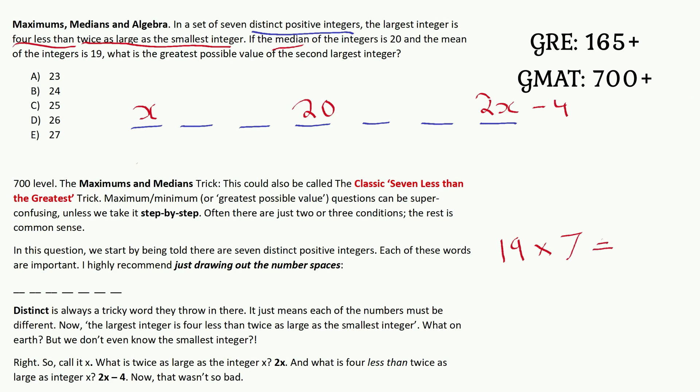In this case, that would be 19 times 7 because there are seven integers here. That will tell us the total or the sum of all of the integers. 19 times 7, I believe, would be 133. You can just do seven times 20 and then take away seven. So we know the integers add up to 133, which could be helpful.